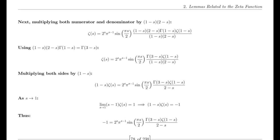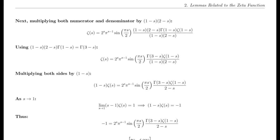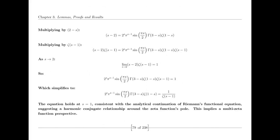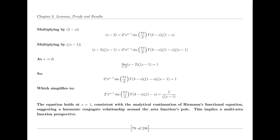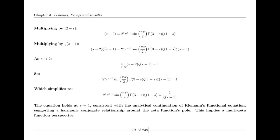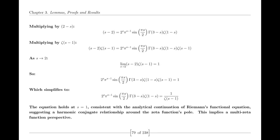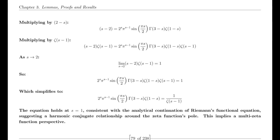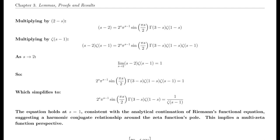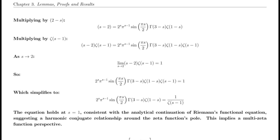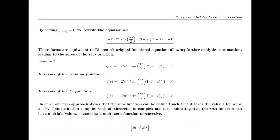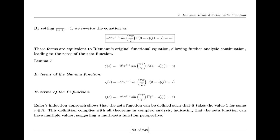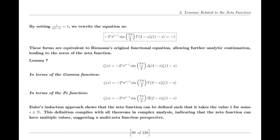The alternate functional equation I propose is derived by carefully examining the reflection properties of both the zeta function and the gamma function. By manipulating these properties, one can construct a new functional equation that is consistent with these reflections but provides a different perspective on the zeta function's behavior. This alternate equation is not arbitrary; it emerges naturally from the underlying properties of these functions. It allows for the extension of the zeta function into regions where its traditional definition might be less informative, facilitates the identification of harmonic conjugates, and helps reveal the distribution of zeros and the maximum and minimum moduli of the function in geometrically significant regions like the dual unit circle and the half unit circle.